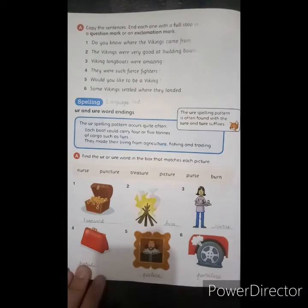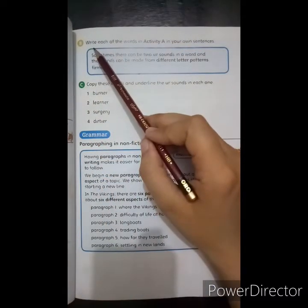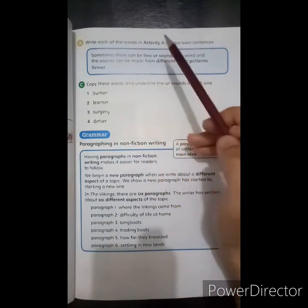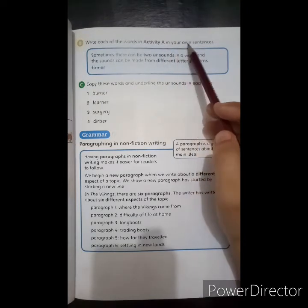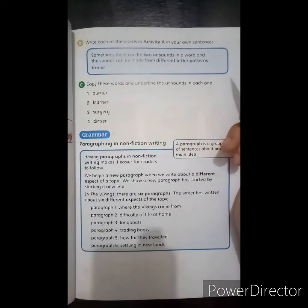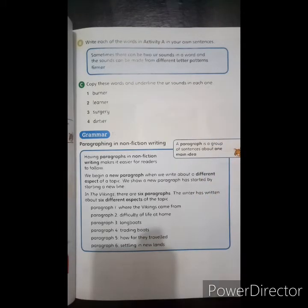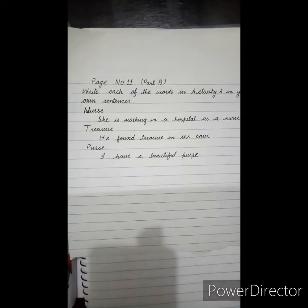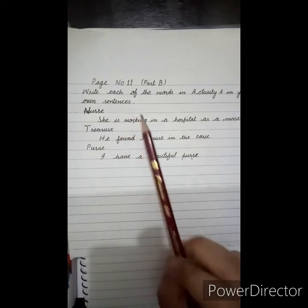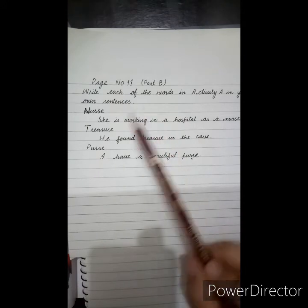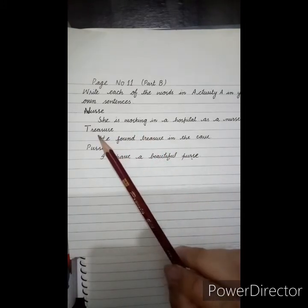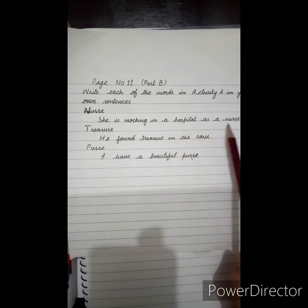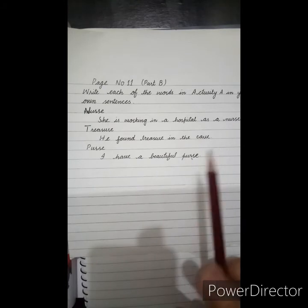Now we move to the next page. Activity B: Write each of the words from Activity A in your own sentences. You have to write two sentences for each word. For example, the first word is nurse — you could write: She is working in a hospital as a nurse.